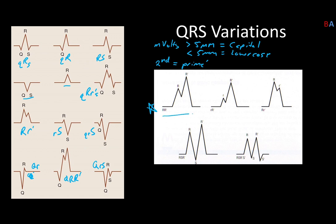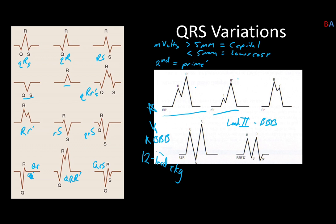These first two patterns, looking from V1 — because which lead you look through will alter what you're seeing — are classic right bundle branch block patterns, which you can only find with a 12-lead EKG. If you're only looking at lead two and you see something like this, all you can really confidently say is that there's a bundle branch block and you can't identify which side, right or left. You need that 12-lead to really diagnose these kinds of things.